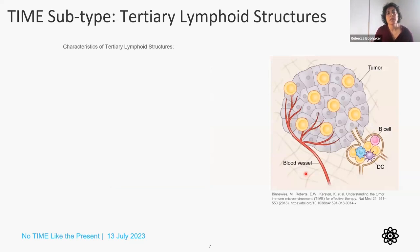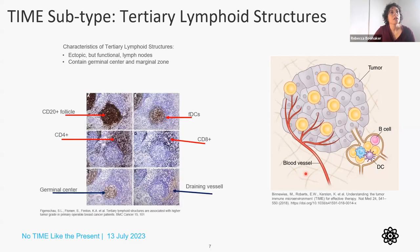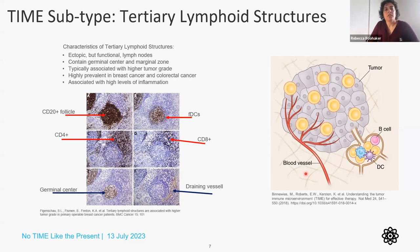The third type are tumors with tertiary lymphoid structures. The tumor immune environment may not be able to traffic out to a draining lymph node, so it'll make one — these are ectopic but functional lymph nodes containing germinal centers and marginal zones. You get the follicle, follicular dendritic cells, CD4 cells, CD8 cells, a germinal center, and a draining vessel — it looks just like a lymph node embedded in a solid tumor. These are typically associated with high tumor grades and are prevalent in breast and colorectal cancers.